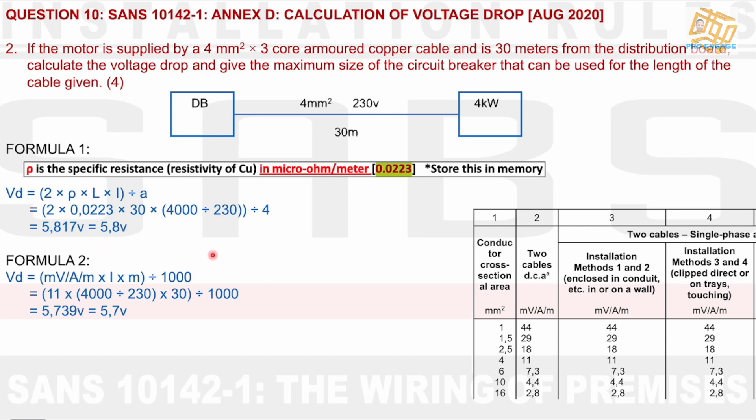In formula two, I then use this formula, millivolt per amp per meter. And according to this from the table, I'm getting an 11 for formula across the board, but I'm using actually single phase. I then inject the values in here and I get an answer of 5.739. This gives me, if I take it one space after the decimal, it's 5.7. Look at how close these answers are: 5.8, 5.7. That's very close. That's good.